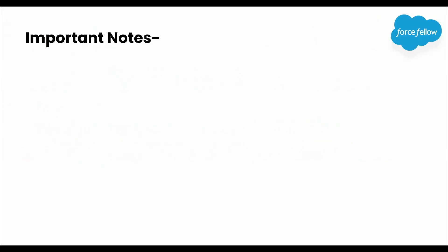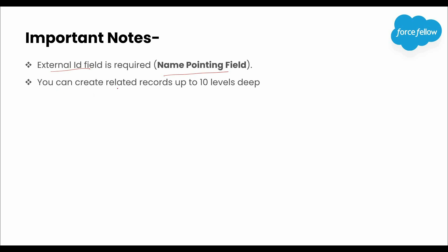Before wrapping this video, let's see a few important points to keep in mind while inserting related records in a single call or using a single DML statement. First, if you want to insert related records without passing the parent record ID, in Apex we can use the external ID field as a foreign key — we can also call that field a name-pointing field. Second point: you can create related records up to 10 levels deep. It means you can create child records up to 10 levels deep — like under account you can create contact, and under contact you can create other object data, and so on, up to 10 levels.